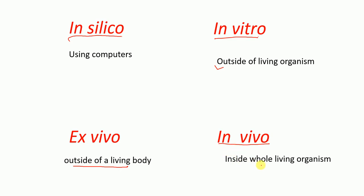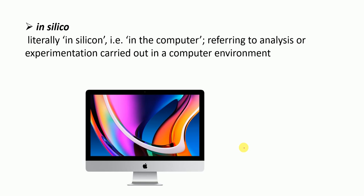These are the meanings of these different Latin terms. Now, what is in silico in more detail? In silico literally means 'in silicon,' which means in the computer. These experiments are carried out in a computer environment, either using a computer program or computer simulation. Such studies are called in silico experiments.